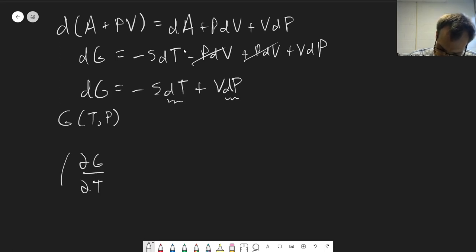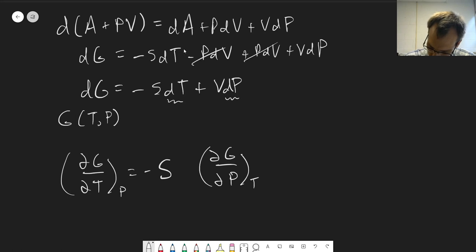dG dT at constant p is equal to negative entropy. So that one's useful. We're going to see this one show up again. dG dP at constant T is equal to volume.